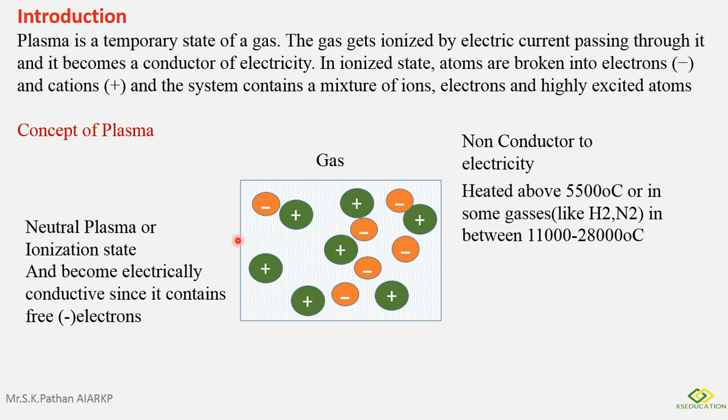Now because of this, this gas can pass electrical current from this point to this point. And this is because of these negative electrons. And this state is called plasma.